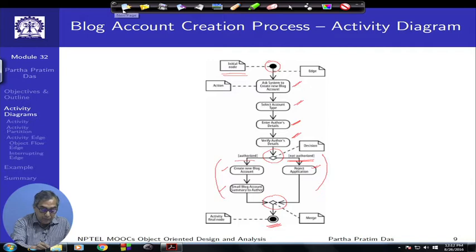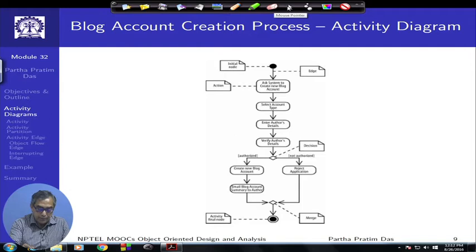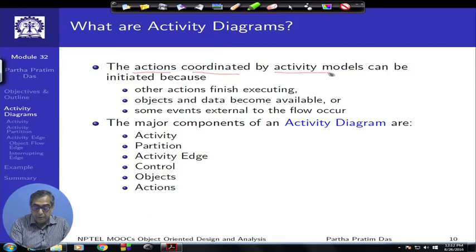This example looks pretty much like a flowchart, and we will see how activity diagrams get enhanced beyond that. In this way, activity diagrams are used to describe different processes that correspond to algorithms or use case realization. Formally, the activity diagram has actions coordinated by activity models — these models can be initiated because some other action has finished.